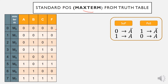Since a product of sum is also known as a max term, we can represent it using a large M symbol. For sum of product terms we use a small m, while for max terms we use a large M.